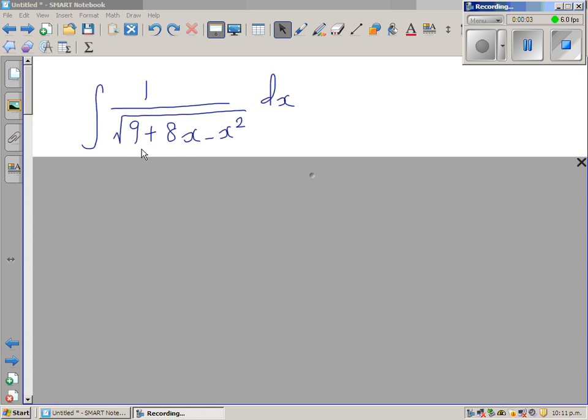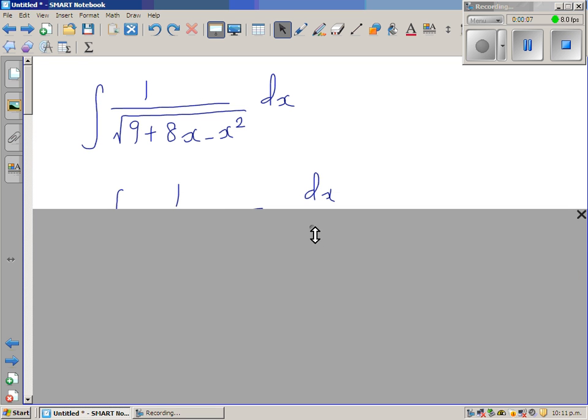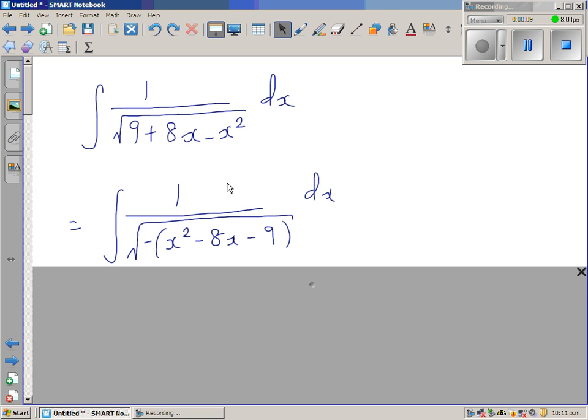Integrate 1 over square root of 9 plus 8x minus x squared. Here I'm factoring out a negative because I want to make this positive x squared. So it's x squared minus 8x minus 9.